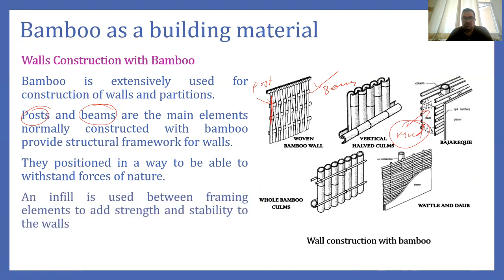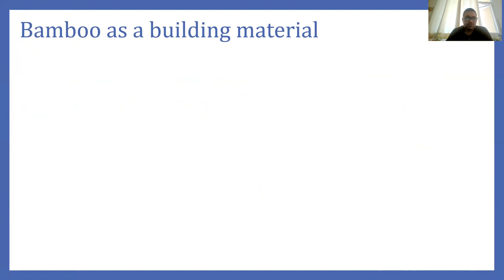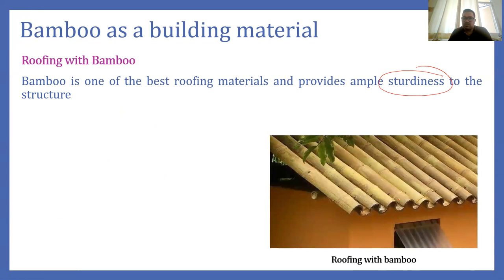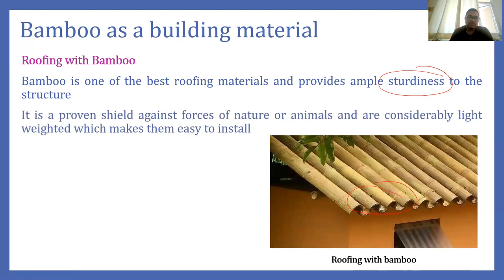The force of nature is simply wind or earthquake. Bamboo can also be used in the roofing system because bamboo is very stiff and a highly sturdy material. We can use bamboo as roofing material. Here you can see bamboo roof used effectively. It is a proven shield against the force of nature and is considerably lightweight, which makes it easy to install.